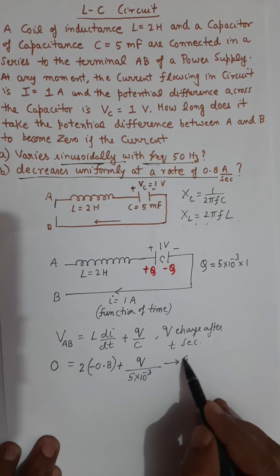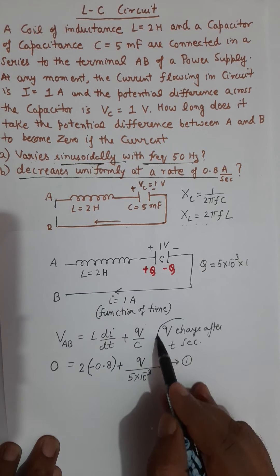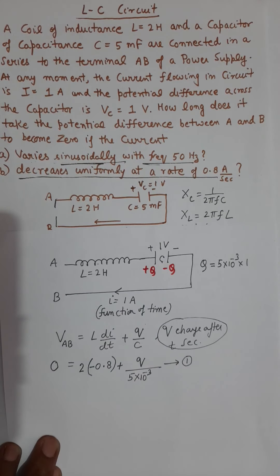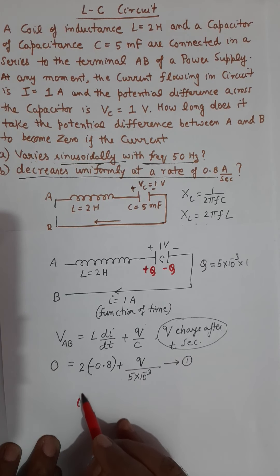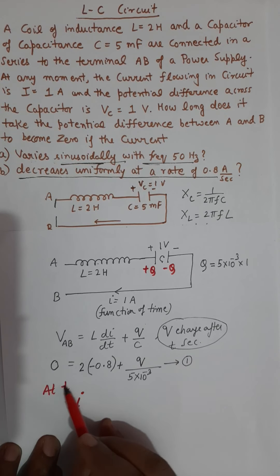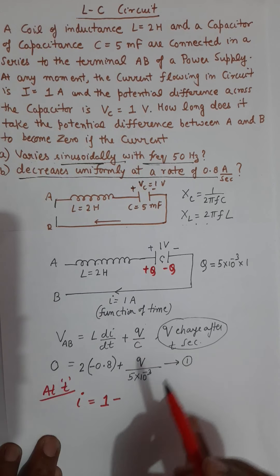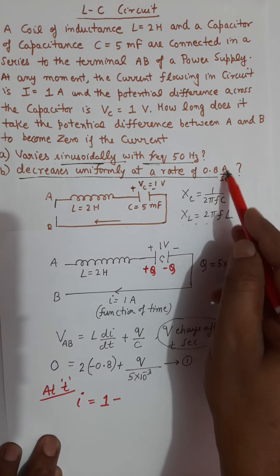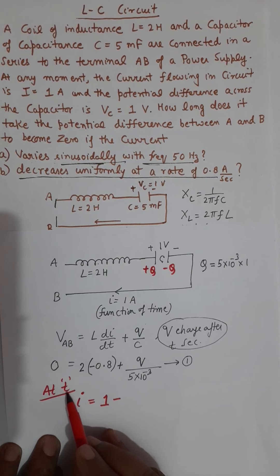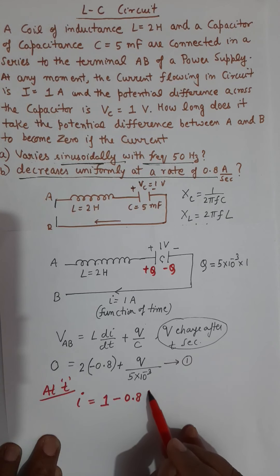Now what is q? L is 2, di/dt is given as 0.8 but notice it is decreasing, so you will take minus 0.8. Then q/C where C is 5 times 10 to the power minus 3 farads and we want V_AB to be 0. To find the value of charge q after t seconds, I will first write the equation of current. The current after t seconds will be the present value of current which is 1 ampere minus 0.8 ampere per second times t.